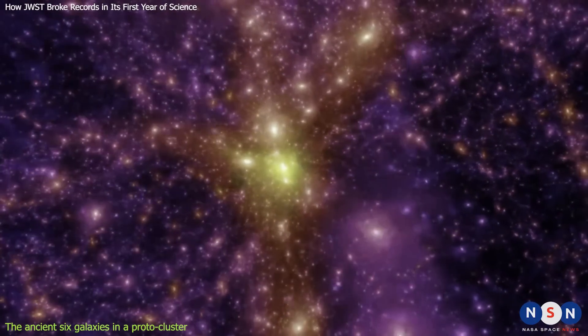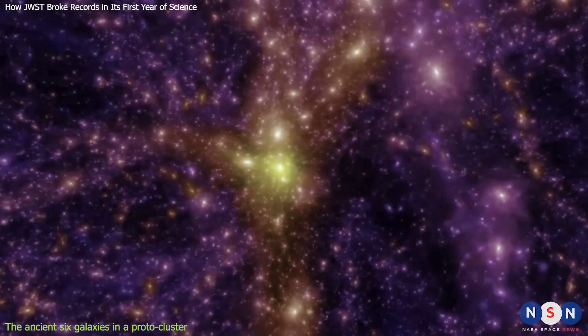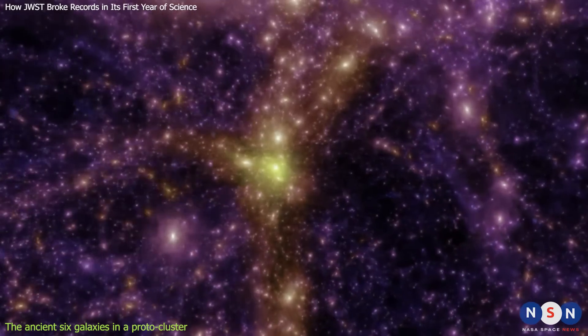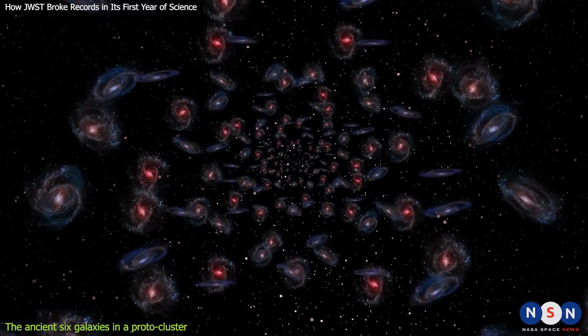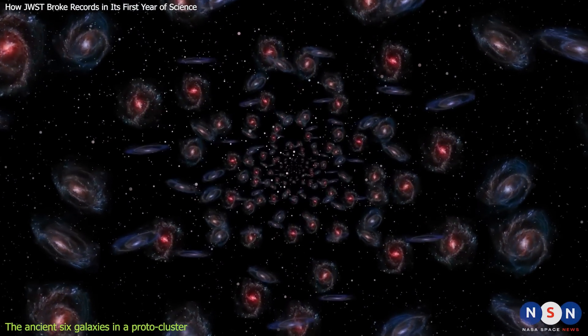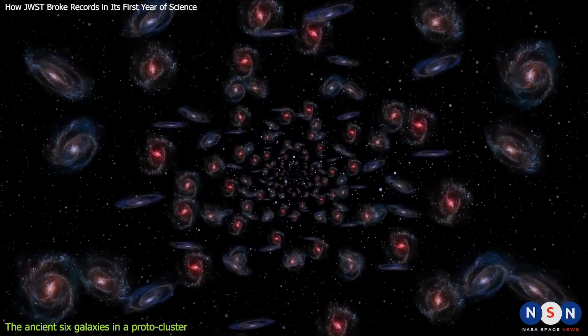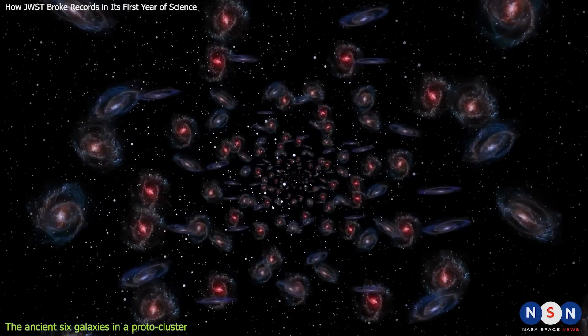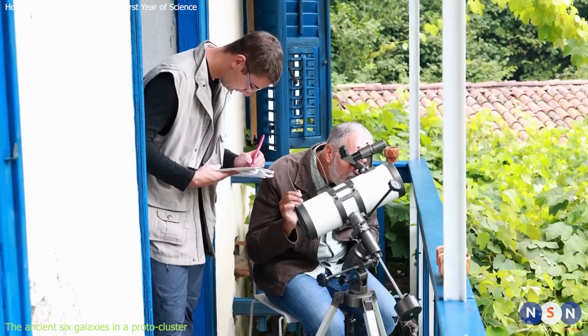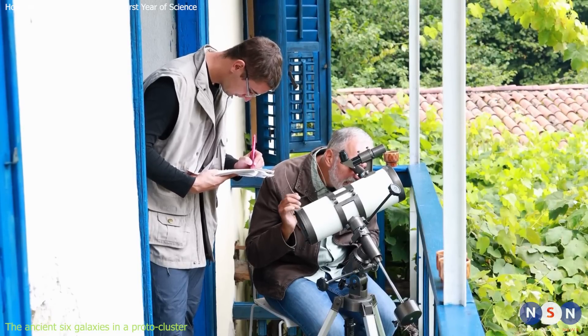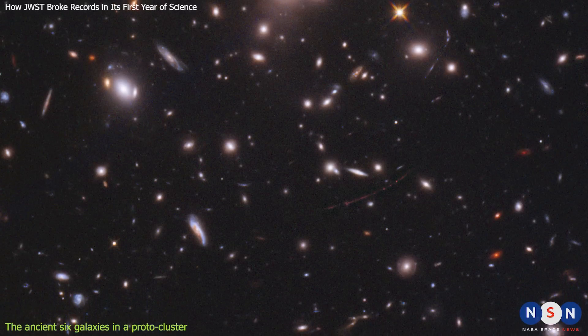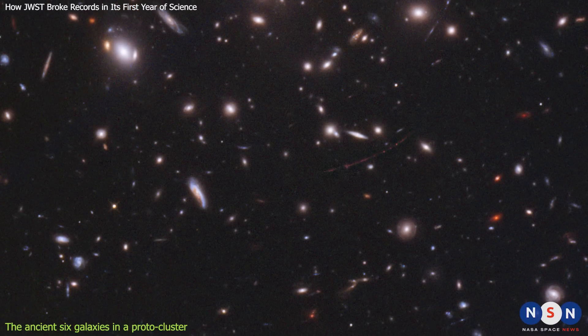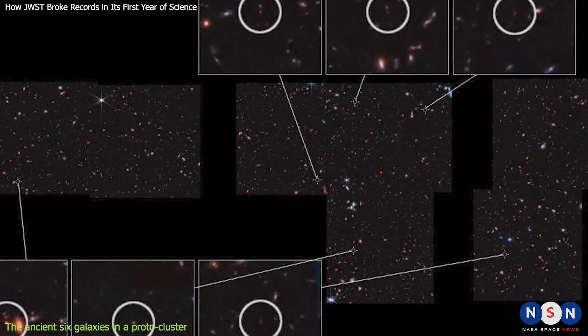Galaxies are the building blocks of the large-scale structure of the universe, which is organized into filaments, clusters, and voids. But how did galaxies form and evolve over time? How did they acquire their diverse properties and morphology? How did they influence each other and their surroundings? These are some of the questions that astronomers have been trying to answer for decades, but they have been limited by the resolution and sensitivity of previous telescopes. James Webb has changed that.